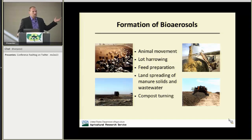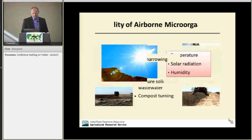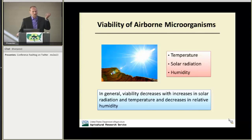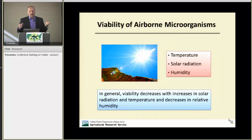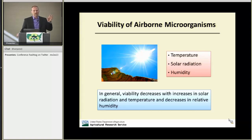Land application of manure is an obvious source, as is turning compost. Once the biological particles are suspended in the air, they're subjected to meteorological factors like temperature, solar radiation, and humidity. In general, the viability of the biological particles will decrease with increases in solar radiation and temperature, and a decrease in relative humidity also tends to decrease their viability.